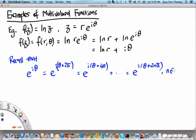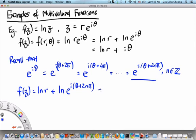But if we substitute this general formula into f(z), then we'll find that this is ln r + ln(e^(i(θ+2nπ))), and therefore this is ln r + i(θ + 2nπ) for integers n. You see that for different integers n, you end up with different values. This is why we say that the natural logarithm of the complex number z is a multi-valued function.